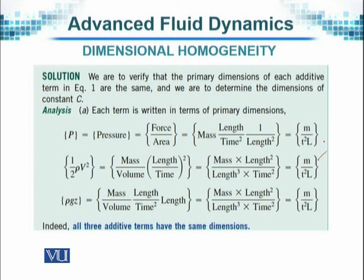The last term in Bernoulli's equation on the left-hand side is rho gz, which equals mass over volume, times g — which is length over time squared, the same as acceleration due to gravity — times the height, which is a length. Simplifying them, it also reduces to M over T squared times L.